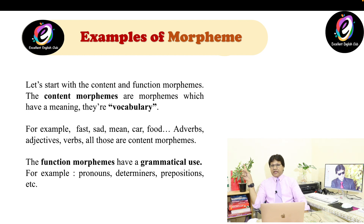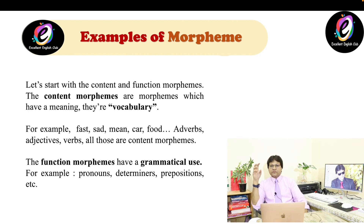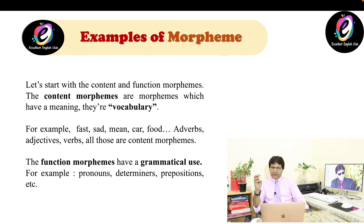On the other hand, function morphemes have a grammatical use. For example, pronouns, determinants, prepositions like in, on — and pronouns like he, she, it, they — these are all function morphemes. So that covers morphology, morphemes, and types of morphemes. The remaining four types — free morpheme, bound morpheme, inflectional morpheme, and derivational morpheme — I will discuss in the next video.